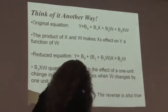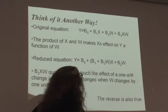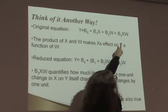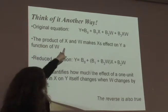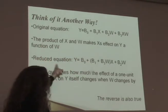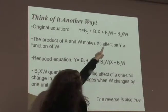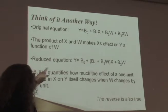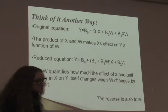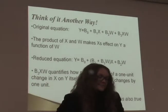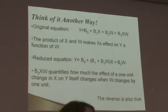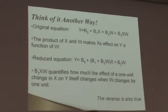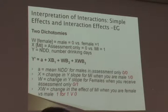In terms of the equation, we add a multiplicative term — the product of X and W — which makes X's effect on Y a function of W. The B3 coefficient quantifies how much the effect of a one-unit change in X on Y itself changes when W changes by one unit, and the reverse is also true. Interpreting interaction effects can be confusing, but if you move slowly and carefully you can keep track of what's going on — and that's what we're going to do today.